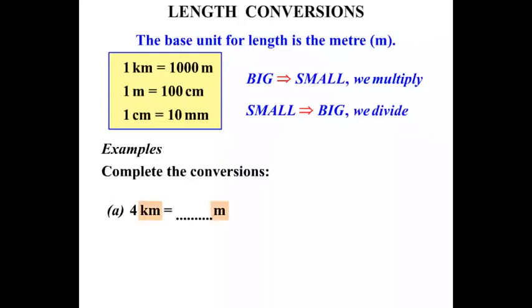We're dealing with kilometers and meters. We know that one kilometer equals a thousand meters, so we're dealing with a factor of a thousand. We're changing from kilometers to meters, from something big to something smaller, so we multiply by that thousand. And four times a thousand is four thousand.